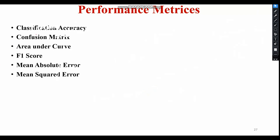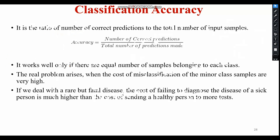The very first metric in the classification category is classification accuracy. It is the basic method or metric to calculate the accuracy or performance of the model. This accuracy metric is one of the simplest classification metrics to implement, and it is defined as the number of correct predictions divided by the total number of predictions made.